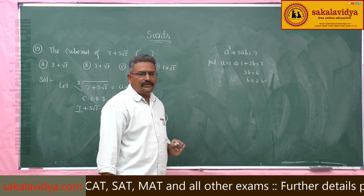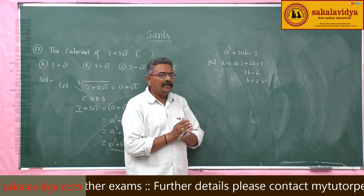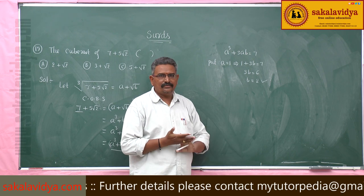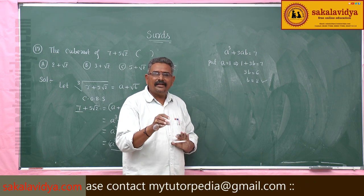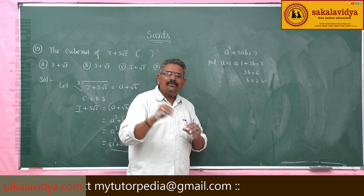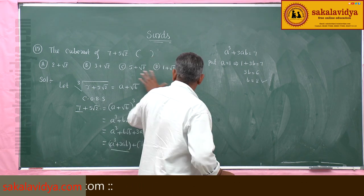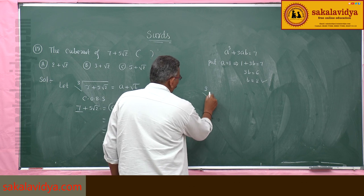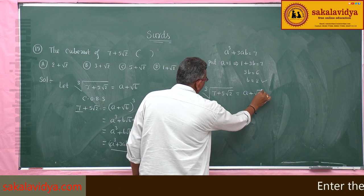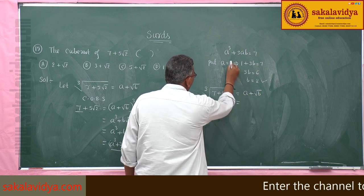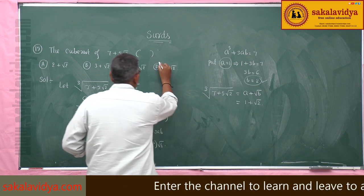First put a equals 1: 1 plus 3b equals 7, so 3b equals 6, so b equals 2. If you get a whole number then stop. If you do not get a whole number, go for a equals 2, a equals 3, a equals 4, until we get b as a whole number. Since b equals 2, stop. Therefore, cube root of 7 plus 5 root 2 equals a plus root b, that is 1 plus root 2. So option d is the right answer.